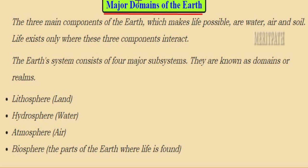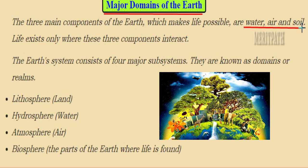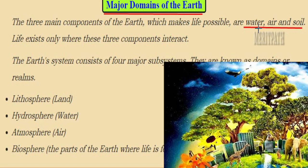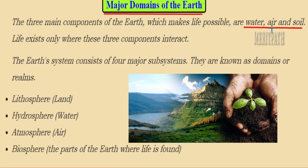Students, let's learn about a new chapter called the four realms of the earth. Earth is the only planet where life exists, and this is a unique and exclusive feature not present on any other planets. The three main components that make existence of life possible are water, air, and soil. Life exists only where these three components interact with each other.